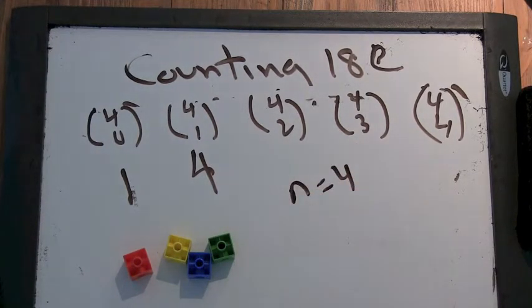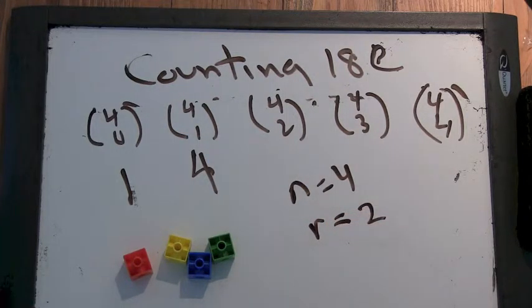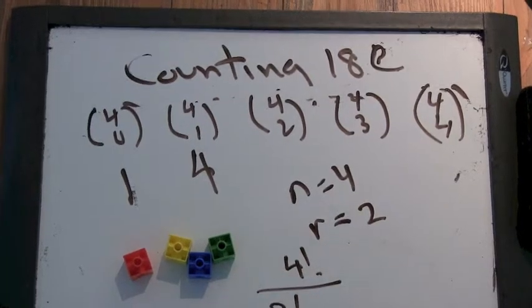Well... It's... You... N is four. So four factorial. It's four factorial over r is two here. Okay. So four factorial over two factorial times two factorial.